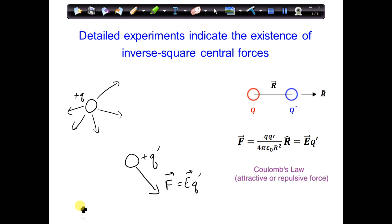On the other hand, if Q is still positive but Q prime is negative, then the Coulomb force on charge Q prime is in the minus R direction. It's going to be an attractive force.